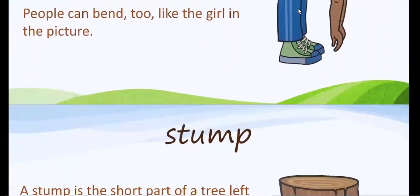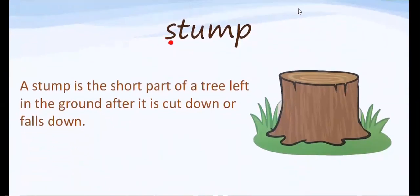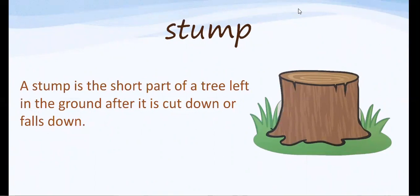Our next word is the word stump. A stump is the short part of a tree left in the ground after it is cut down or it falls down. Look at the picture of the tree stump right here. Can we all say stump together? Stump.